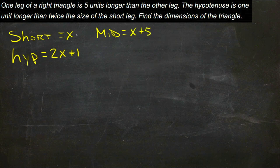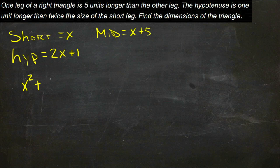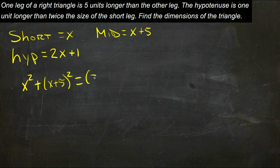So now we have a way to describe each of the three sides, and we know that the short leg squared, so x squared plus the middle leg squared, x plus five squared, should equal two x plus one squared, the hypotenuse squared.